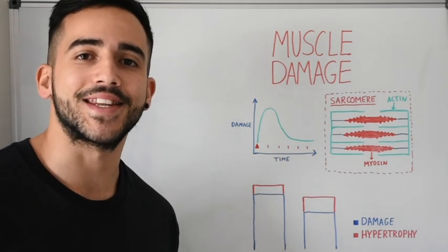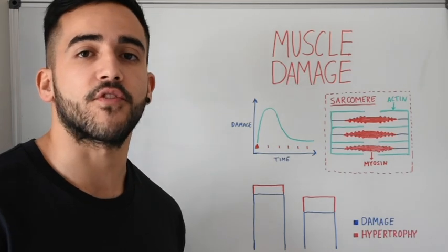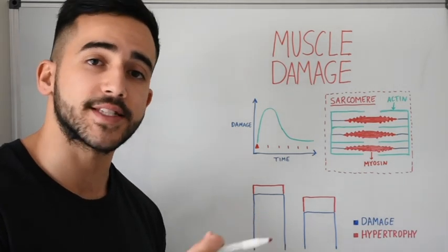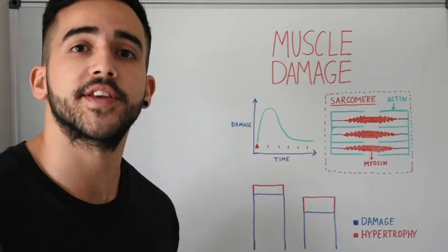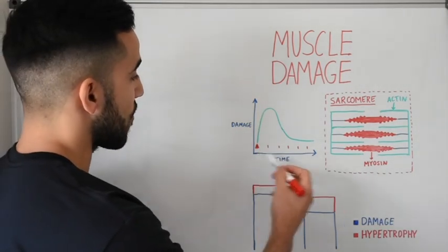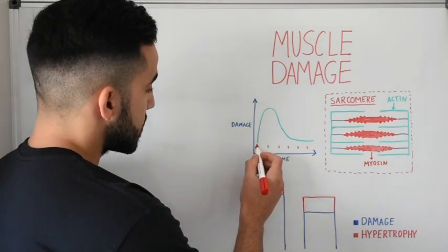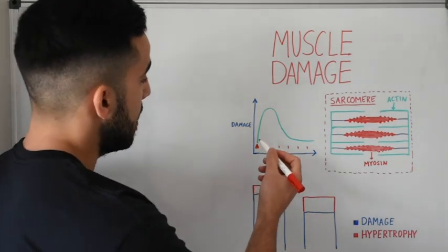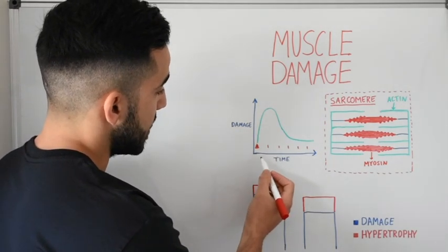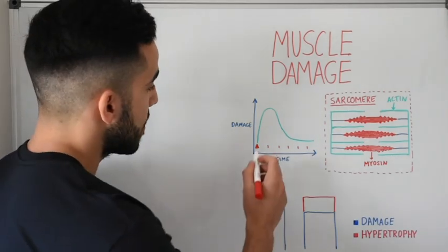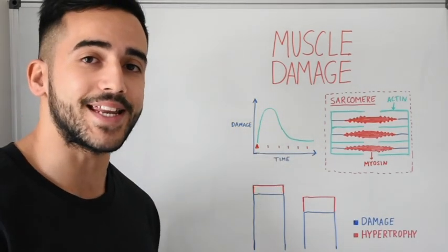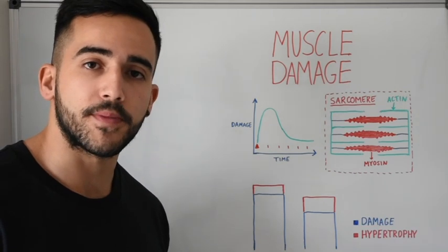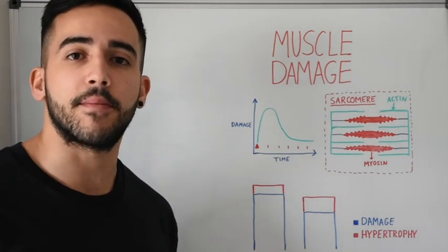Muscle damage tends to occur when the muscle fibers experience a stimulus they are unaccustomed to — maybe a new exercise, different rep ranges, or different loading zones. Generally when you start a new training phase you'll have different exercises you may be unaccustomed to, which leads to muscle damage. As shown on this graph, when there's an unaccustomed stimulus, muscle damage goes up, and over time it drops as you keep repeating that same stimulus — this is the repeated bout effect.